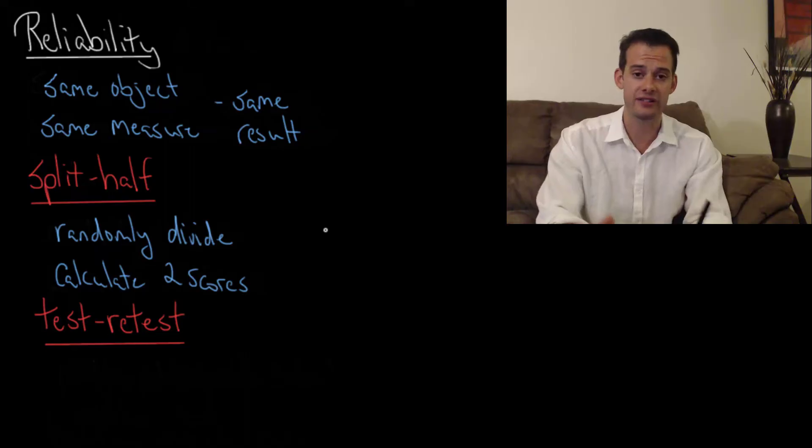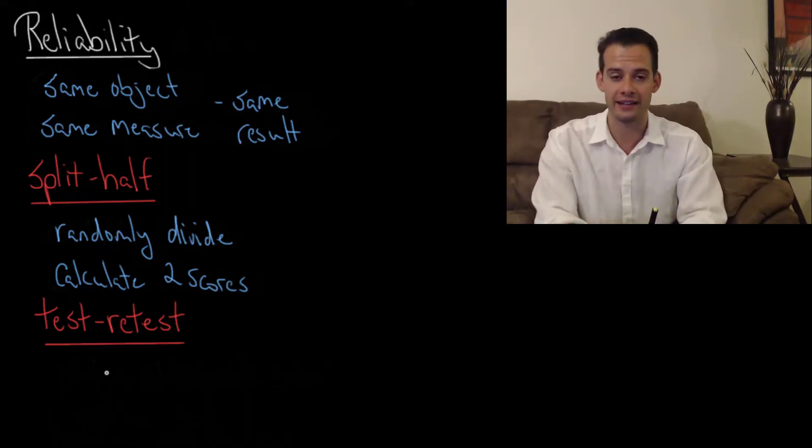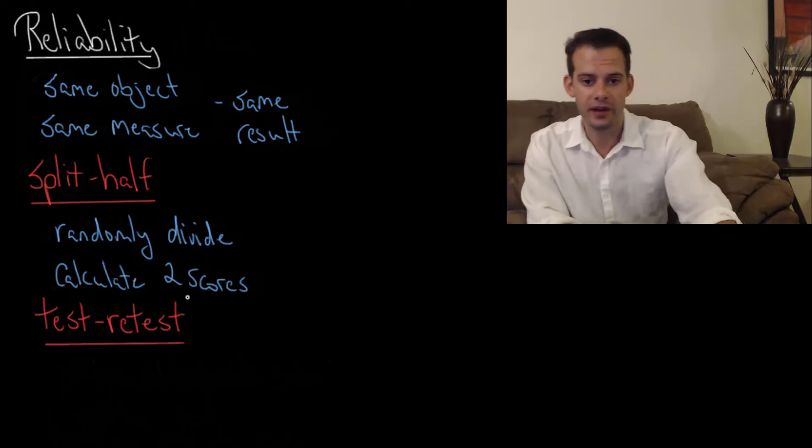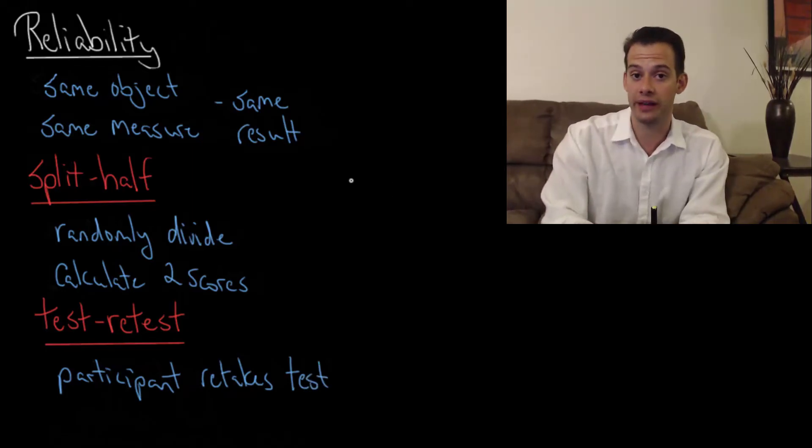Another way is called test-retest reliability. And this is actually how I introduced the idea of reliability. You take an IQ test and then six months later or so you take it again. So each participant simply retakes the same test. And the idea is if it's a reliable test then they should get the same result each time.